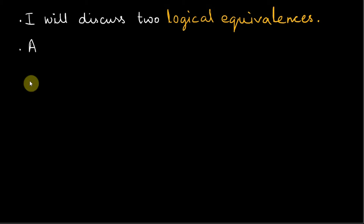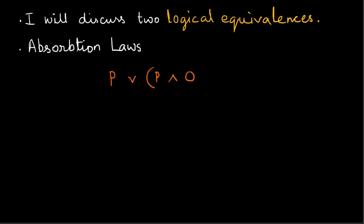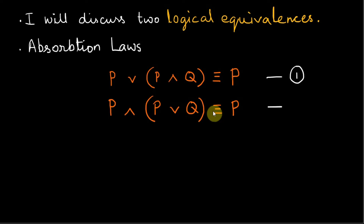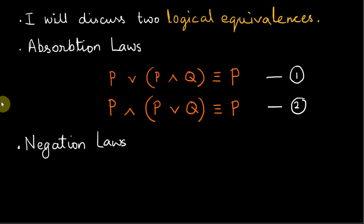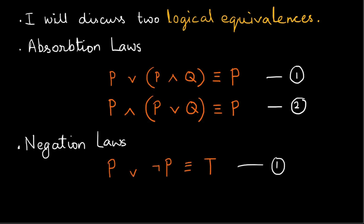The first logical equivalence is the absorption law: P or (P and Q) is equivalent to P, and P and (P or Q) is equivalent to P. The second logical equivalence is the negation law: P or not P is equivalent to true, and P and not P is equivalent to false.